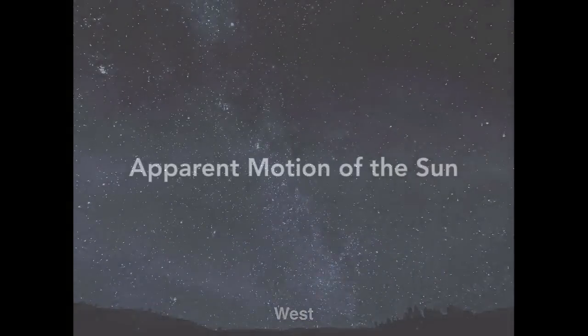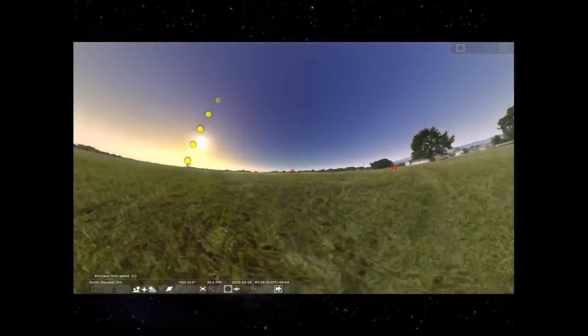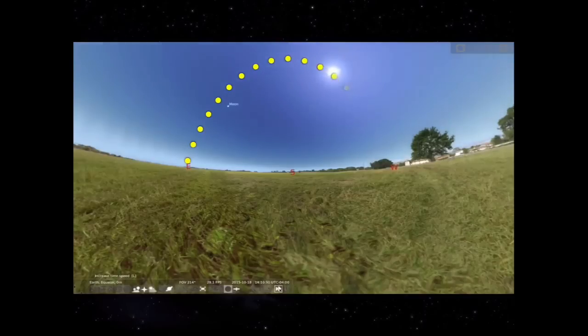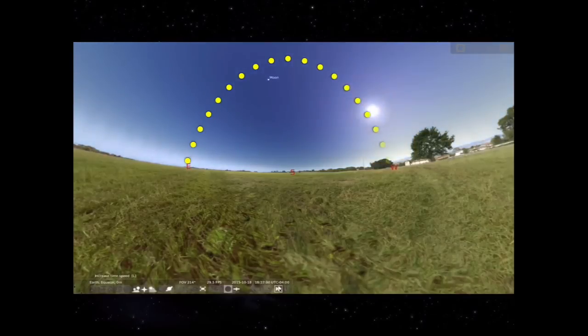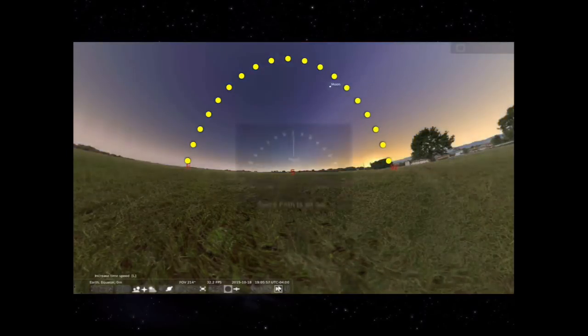And finally, the apparent motion of our Sun. The Sun appears to move in an arc across the sky, rising in the east, setting in the west. The highest point the Sun reaches during the day is always the noon position.